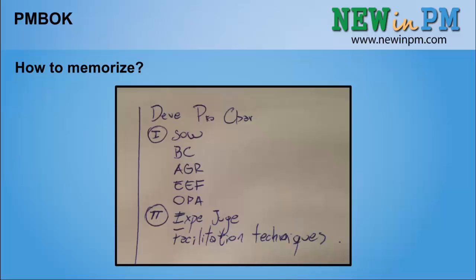I was not writing down the full word — for instance, here you see the blog project charter, I'm not writing the full word because it's not necessary. I just needed to remember the word, and this helped me know the correct order. The second time I wrote down, I changed 'meetings' to 'facilitation techniques,' which meant I could then write down the outputs. I was writing down a process, and at the end I was checking it. If the process was correct, I moved forward to the next process. If not, I started from the beginning.